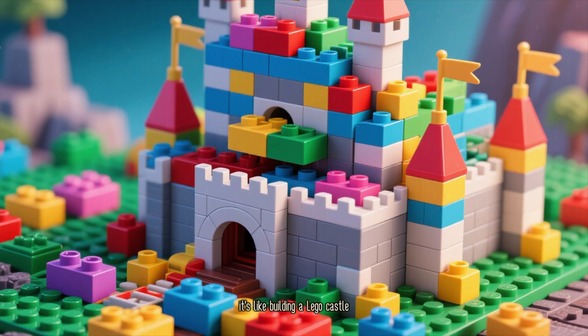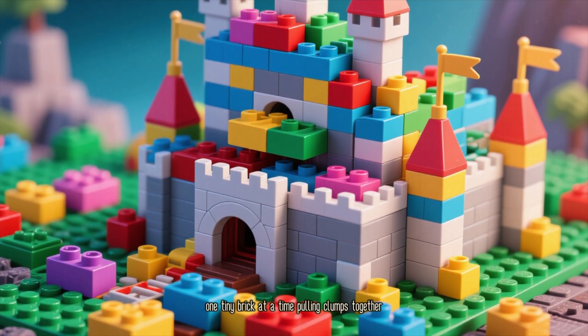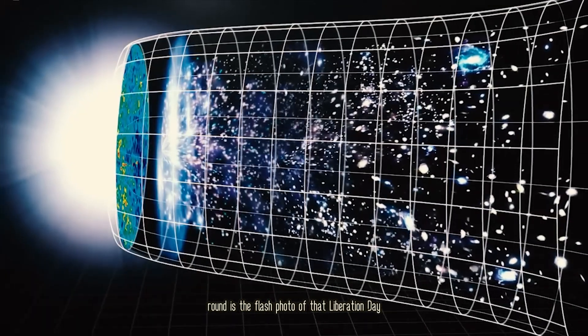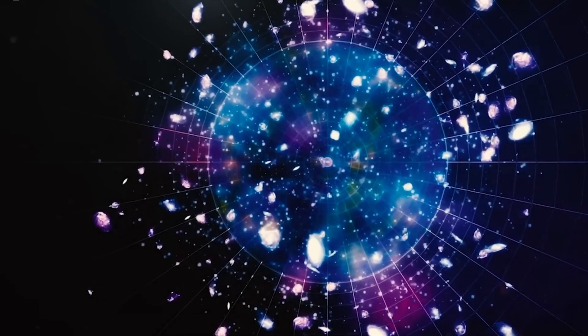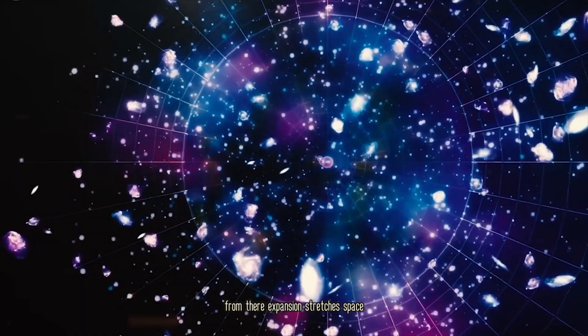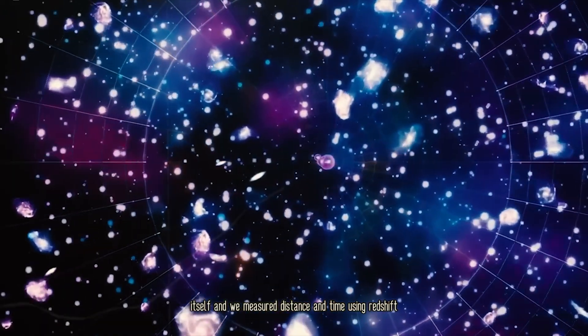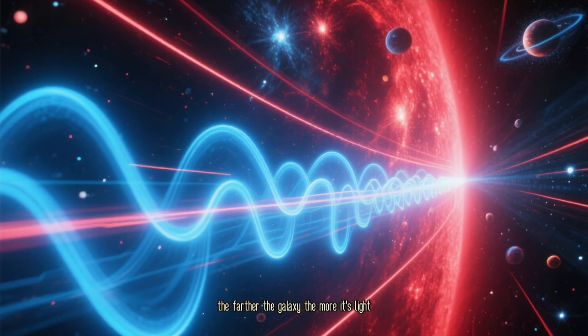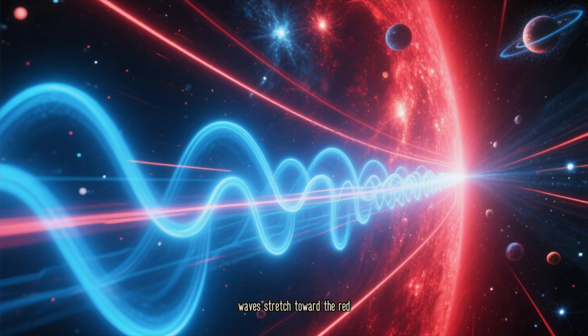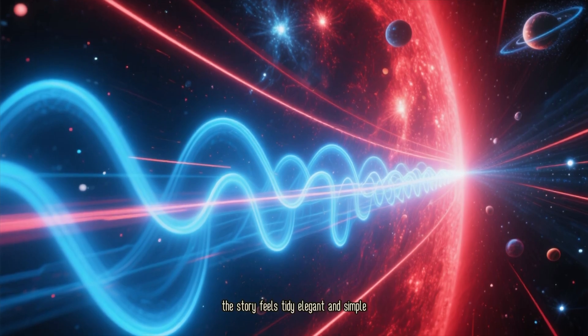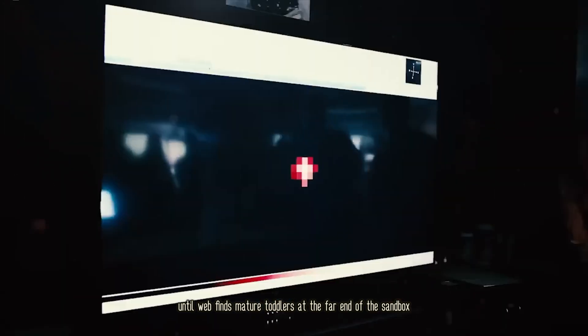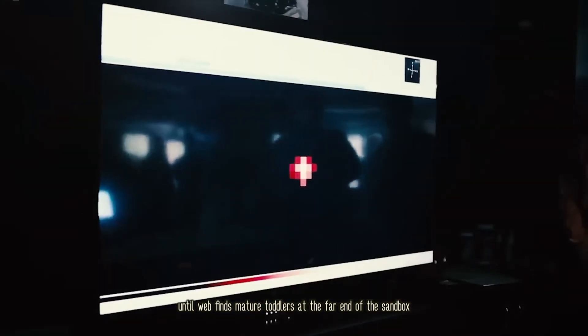It's like building a Lego castle, one tiny brick at a time, pulling clumps together. Galaxies are born. The cosmic microwave background is the flash photo of that liberation day. From there, expansion stretches space itself, and we measure distance and time using redshift. The farther the galaxy, the more its light waves stretch toward the red. The story feels tidy, elegant, and simple, until Webb finds mature toddlers at the far end of the sandbox.